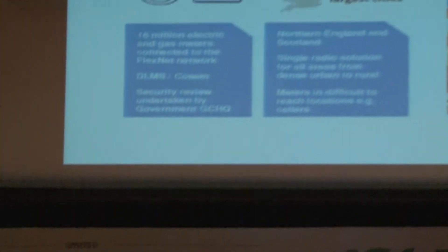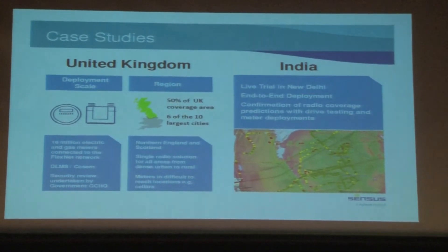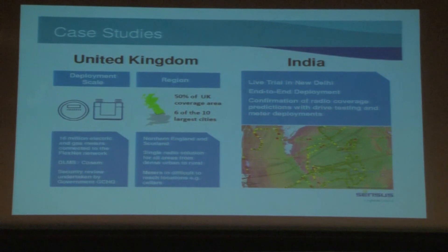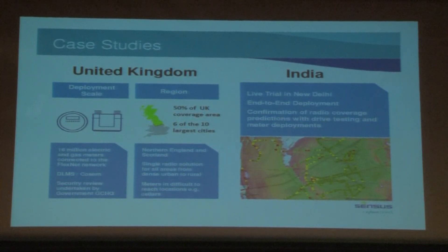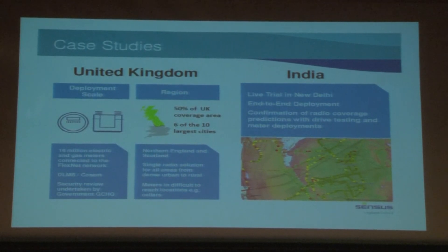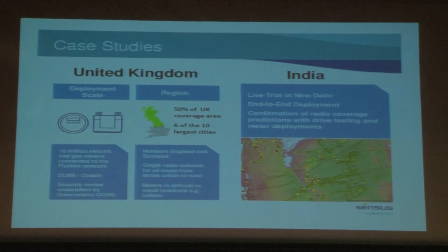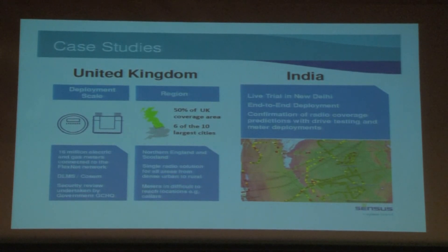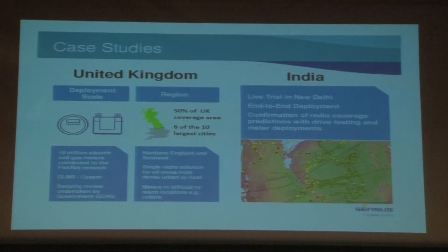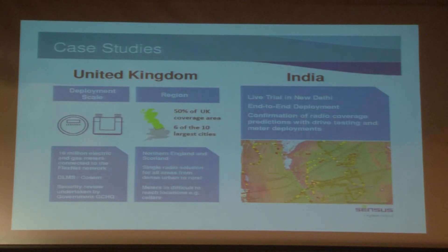As case studies: we've deployed, or are deploying, the solution with a partner, Archiva, in the United Kingdom, connecting 60 million meters — 10 million electric, 6 million gas. It's a DLMS COSEM implementation, which India is also proposing. Importantly, the reason the UK project was initially delayed was the government realized how important it is to make sure any connection to everybody's home is done in a secure way. GCHQ undertook a study to ensure the right processes were implemented, and that experience can be directly brought over to countries like India — there's no need to go through that learning curve, as it's now baked into a number of solutions.